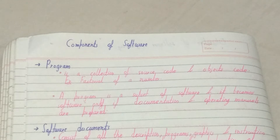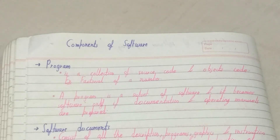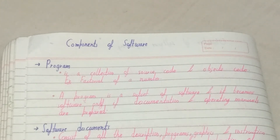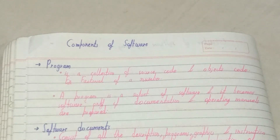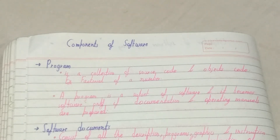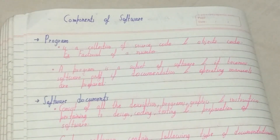But when a program becomes a software, what is the difference between a program and a software? If we do a proper documentation of how the factorial of a number program was written, and also do proper testing on that particular program, and also define an operating procedure for how to run that particular software, then only it will become a software. So a program with proper software documentation as well as an operating manual becomes a software.